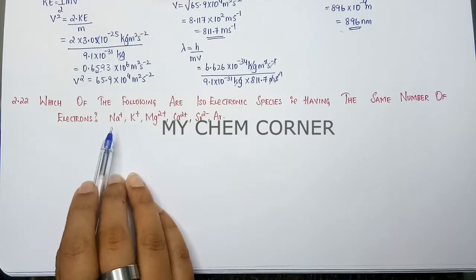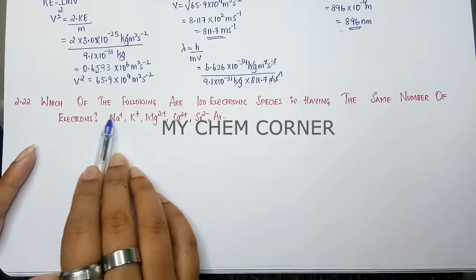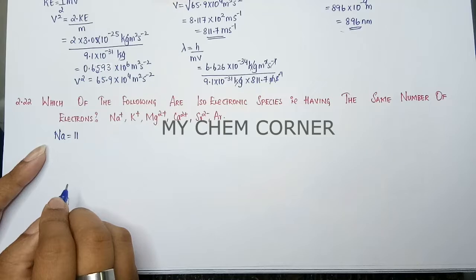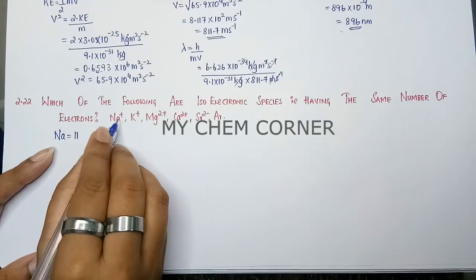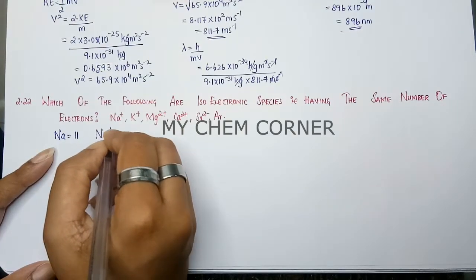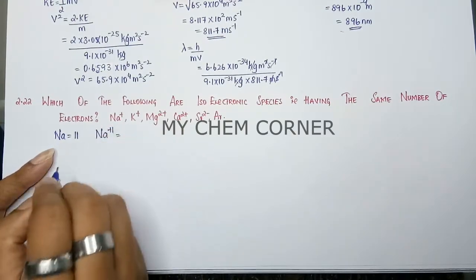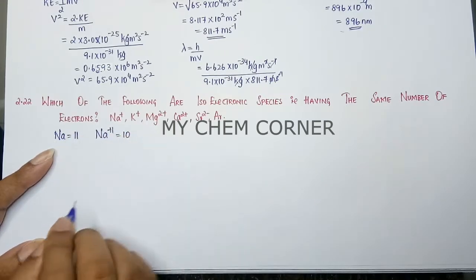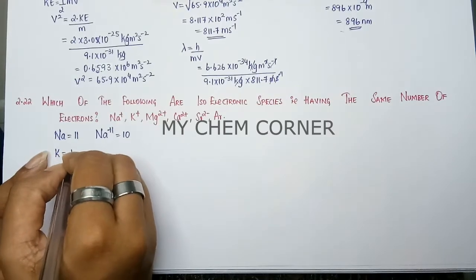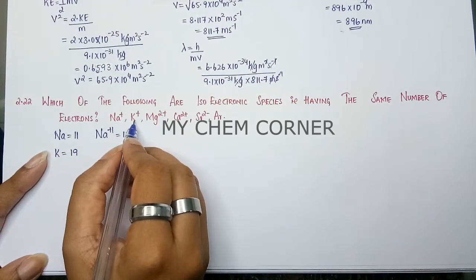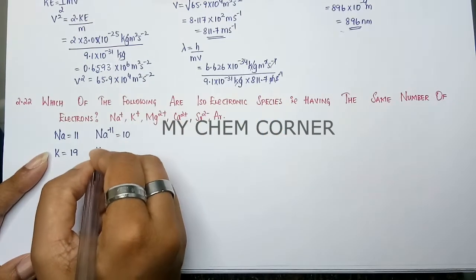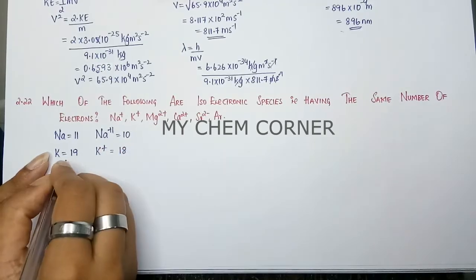When counting the electrons, remember for sodium the atomic number is 11. But what is asked here is sodium plus, which means one electron is lost. So for Na+, I'm removing one electron which means I will have 10 electrons. Next is potassium, atomic number 19. It is given as K+, which means one electron is lost. So K+ will be 18.